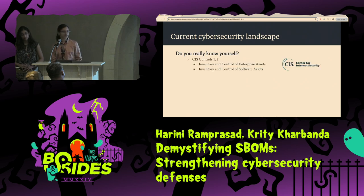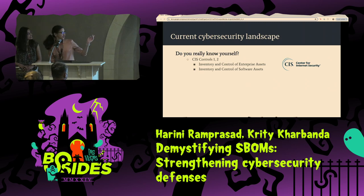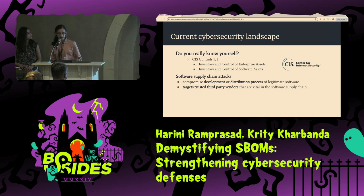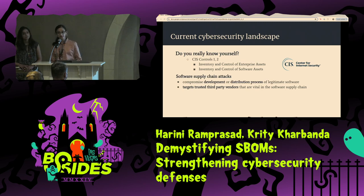This is also being emphasized by the CIS controls one and two, which are about inventory and control of enterprise and software assets. So why is this reflection exercise more than important today? This has become really important in the light of software supply chain attacks — attacks where bad actors are targeting legitimate third-party software vendors and software that is widely being used in the supply chain.